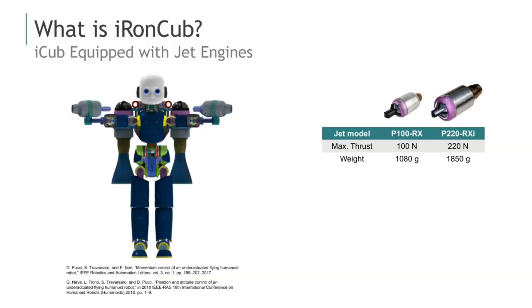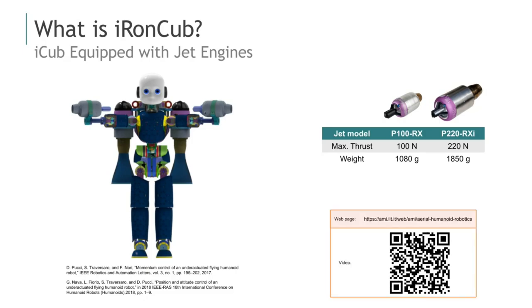So what's IronCub? IronCub is the robot iCub equipped with jet engines. Developed in the Italian Institute of Technology, the aim of the project is to provide the robot with flying capabilities in addition to terrestrial locomotion and manipulation. For more details about the project, please refer to the following links.